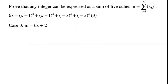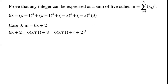Case 3: m equals 6k plus or minus 2. This can be written as 6 times (k minus or plus 1) plus or minus 8, which equals 6 times (k minus or plus 1) plus (plus or minus 2) cubed. Let i equal k minus or plus 1. We have m equals 6i plus (plus or minus 2) cubed.